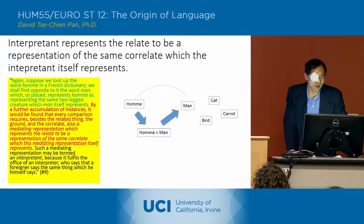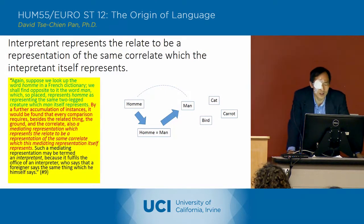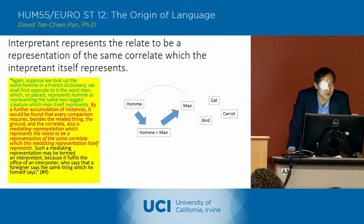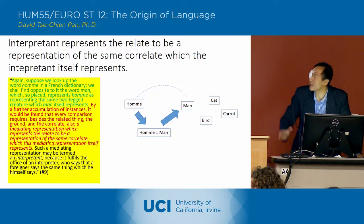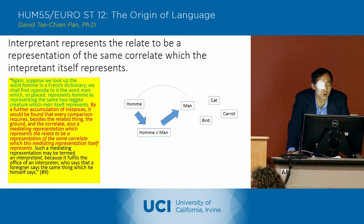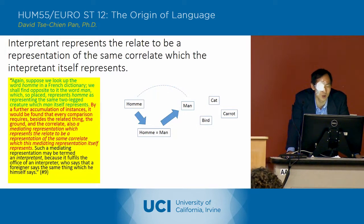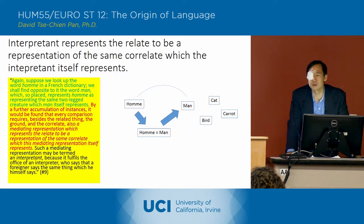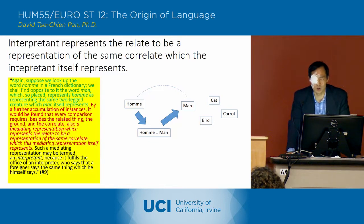He's got another example. Suppose we look up the word 'homme' in a French dictionary, we shall find opposite to it the word 'man', which so placed represents 'homme' as representing the same two-legged creature which 'man' itself represents. So that's the example — sort of this translation of the word 'homme' to 'man'. We've got 'homme' equals 'man'.